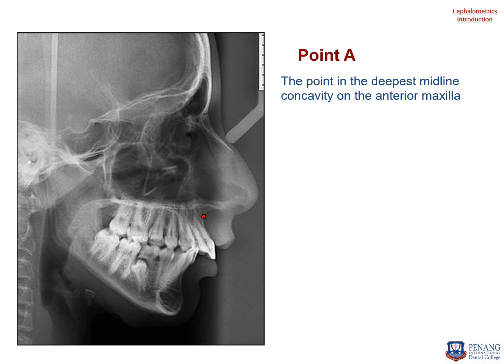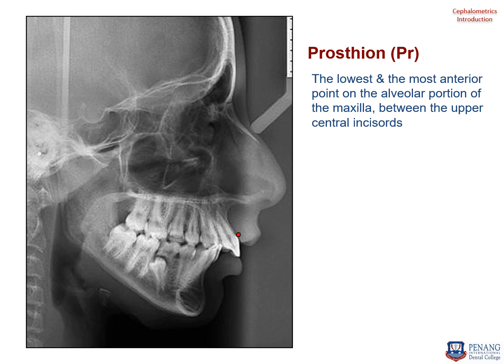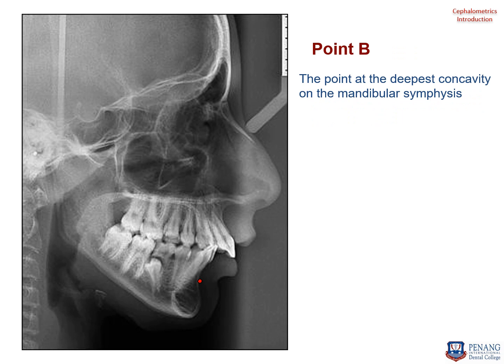Point A is the point of deepest midline concavity on the anterior maxilla — look at the anterior maxilla and find the deepest concavity. Prosthion is the most anterior point on the alveolar portion of the maxilla between the upper central incisors — locate the upper central incisors and the alveolar tip. Point B is at the deepest concavity on the mandibular symphysis — locate the mandibular symphysis and find the deepest concavity there.